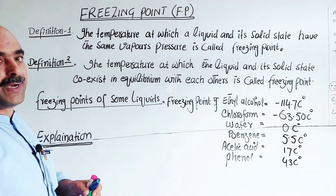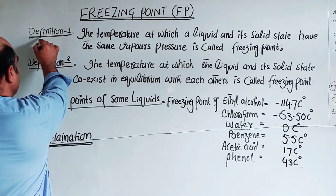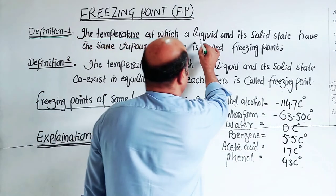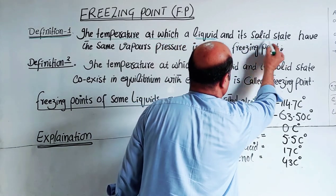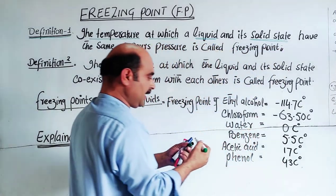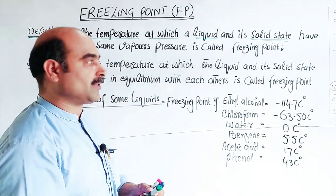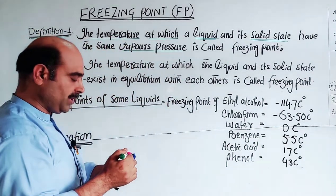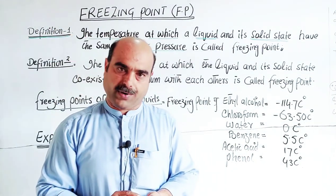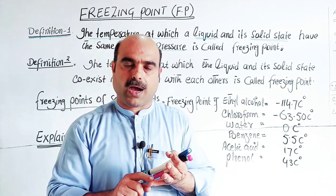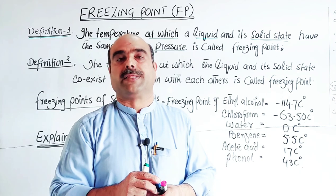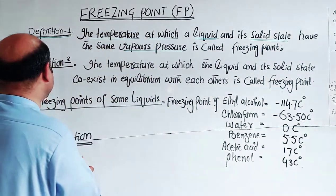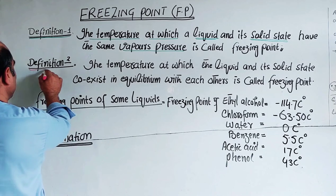Definition number one: the freezing point of a liquid can be defined as the temperature at which a liquid converts to its solid state. At this temperature, the vapor pressure of the liquid and the vapor pressure of its solid state are the same. That temperature is the freezing point of the liquid.